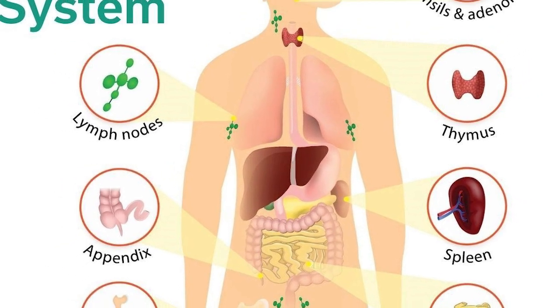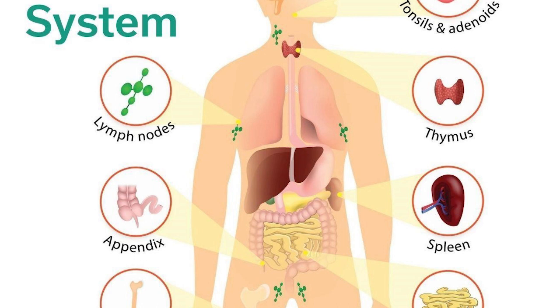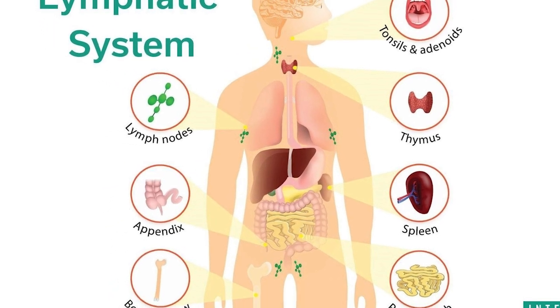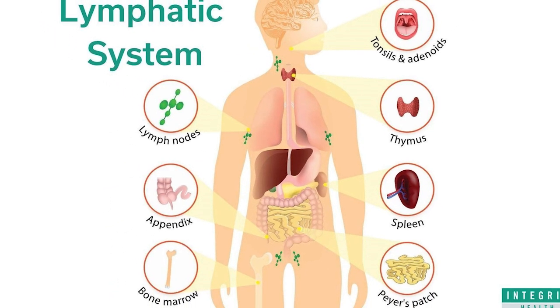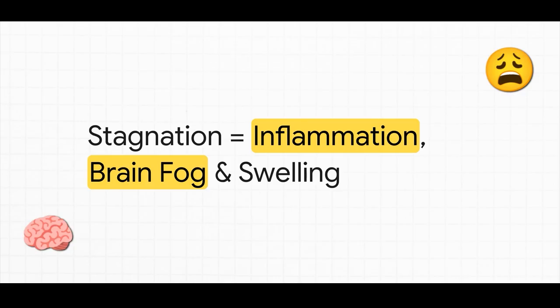And there you have it. That's the connection. When this system stagnates, when it gets clogged up, you get the exact problems we talked about at the beginning. Inflammation, that annoying brain fog, and swelling. It is a direct cause and effect.